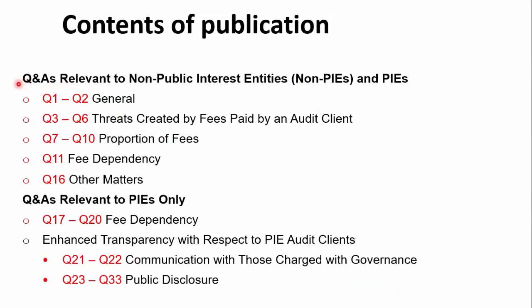The Q&A document: the first section is relevant to both non-PIEs and PIEs. You first need to decide whether your client is a PIE or non-PIE — the definitions were revised in 2019 and a new document was released recently, so check that separate TSV. If it's a PIE, you'll have to focus on everything. Non-PIEs only need to focus up to question 16. From question 17 to 33, those are only for PIEs. The first two questions are general issues.